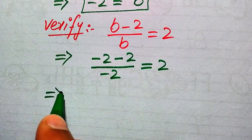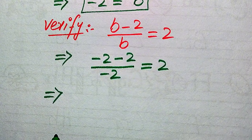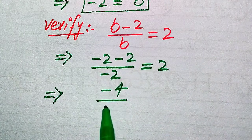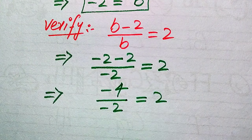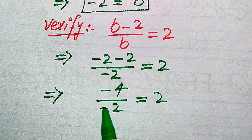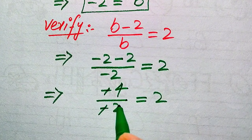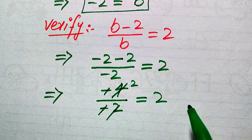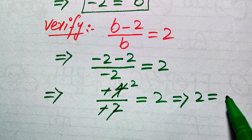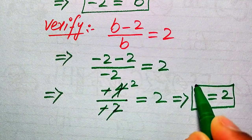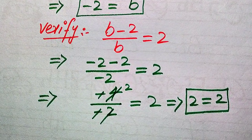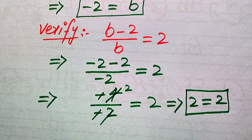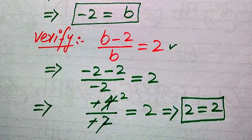In the next step, minus 2 minus 2 becomes minus 4, divided by minus 2, equals 2. The negative terms cancel out, and we cancel the 2s, so we get 4 divided by 2 equals 2, which gives us 2 equals 2. Both sides are equal, so the value b equals minus 2 satisfies the given equation.